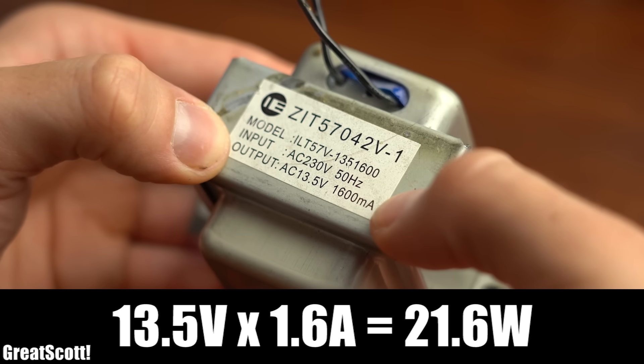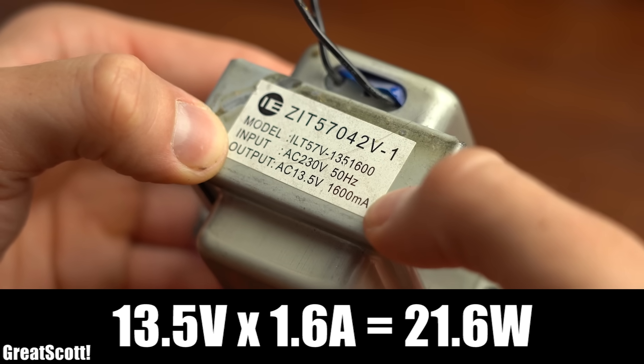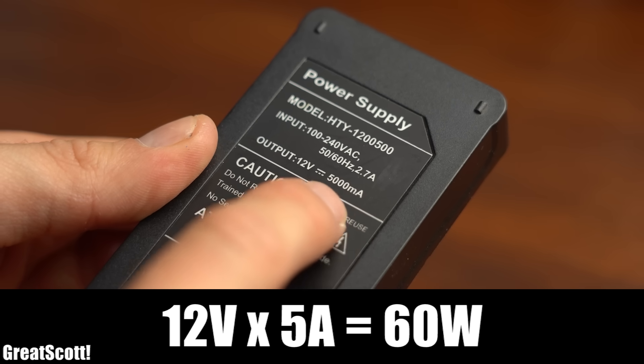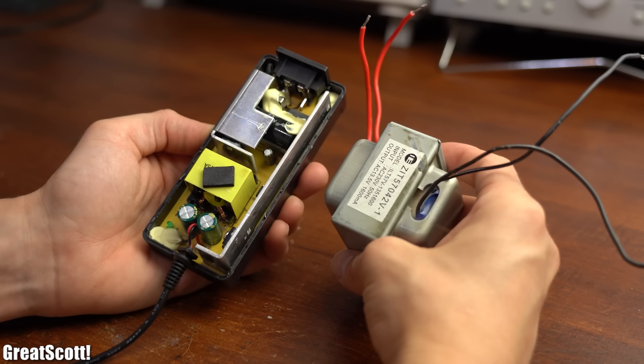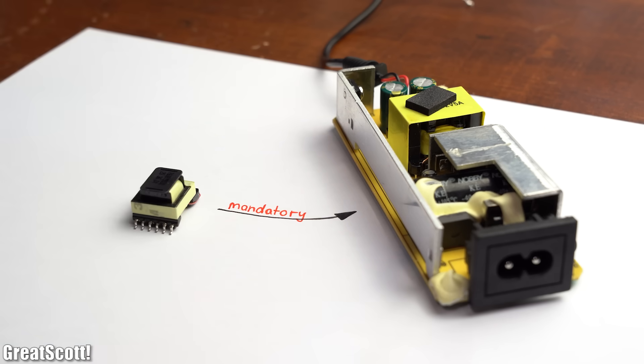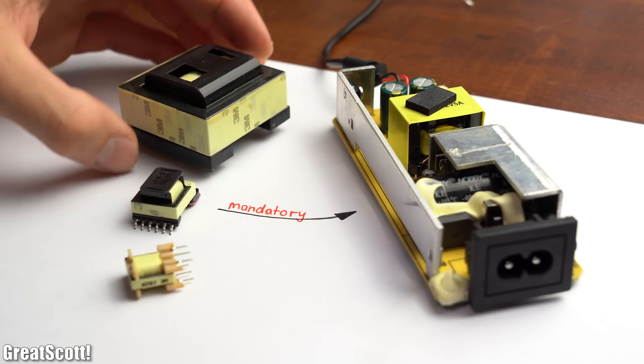For example, this mains transformer here can output around 21.6W, while the switched-mode power supply with a similar size can output almost 3 times as much while being lighter and featuring a higher efficiency. So in a nutshell, such flyback transformers are essential for modern and efficient switched-mode power supplies.